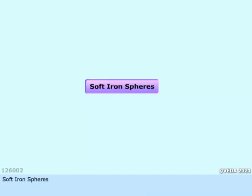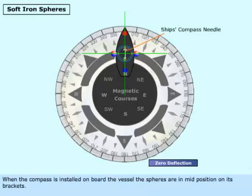Soft Iron Spheres. When the compass is installed on board the vessel, the spheres are in mid-position on its brackets.